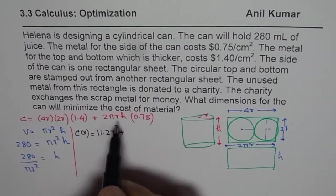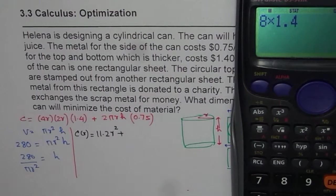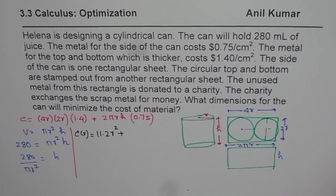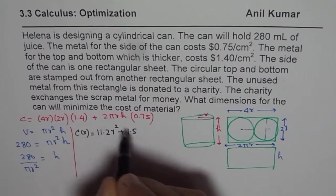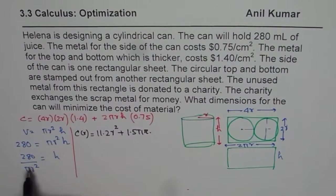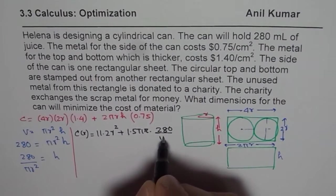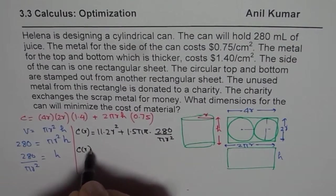plus here, we will multiply 2 by 0.75, 1.5. So we will do that calculation. We will just write 1.5 pi R times H. Instead of H, write down 280 divided by pi R square.